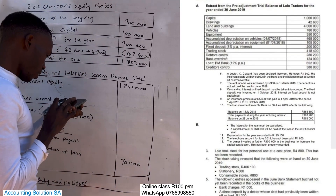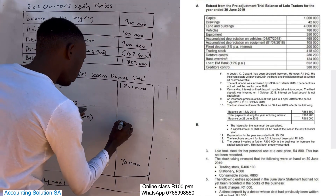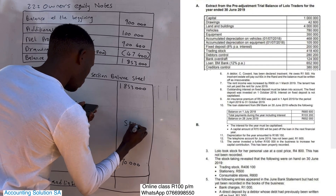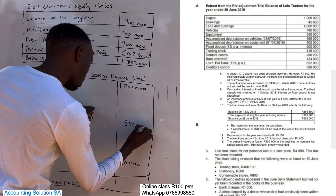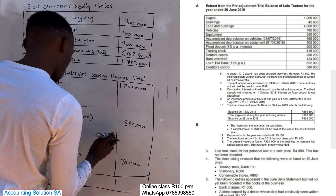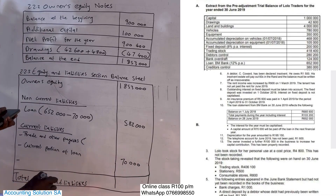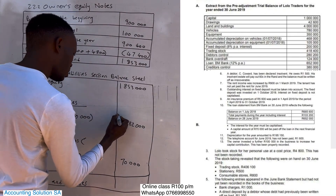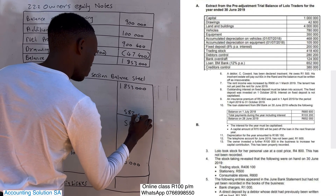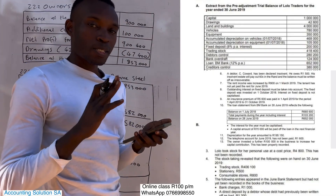So we remove 70,000 from the long-term loan, giving a remaining long-term loan balance of 582,000. The total non-current liability is therefore 582,000.